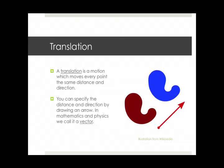Now, that arrow, when it's used for that purpose in mathematics and physics, is called a vector. A vector is an arrow used to specify a distance and direction. Especially when you want to think of it as a motion in that distance and direction.